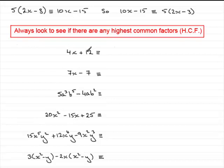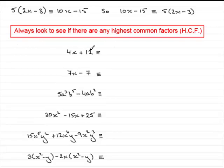Let's take the first one: 4x plus 12. You'll notice we've got a couple of terms here. What we need to do is try and see first of all if there is a number that goes into the 4 and the 12, or if there is a common letter in both terms. Well, 2 goes into both 4 and 12, but it's not the highest common factor. The highest common factor is in fact 4 — 4 goes into 4 once and 4 goes into 12 three times.